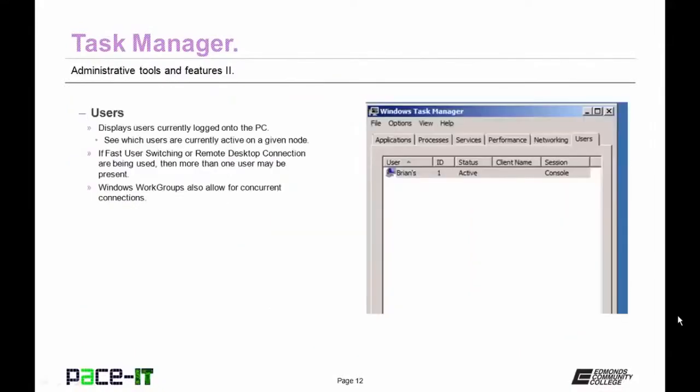The Networking tab gives the user a visual of how much of the system's available network bandwidth is being utilized. The Users tab displays all users currently logged into a PC — Windows workgroup allows up to ten concurrent connections, so you could see more than one. You may also see more users if using fast user switching or remote desktop.